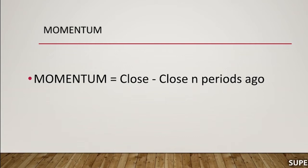Suppose the current closing price of a company's share is Rs. 12 and the price 12 days back was Rs. 10. We can calculate momentum by applying the equation: current closing price minus old closing price. Here, 12 minus 10 equals 2, which is the momentum.